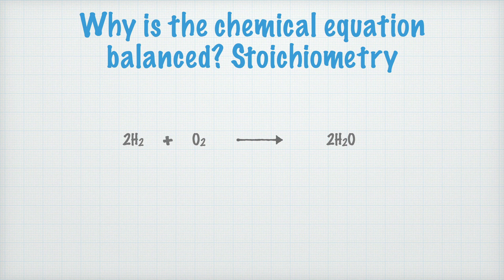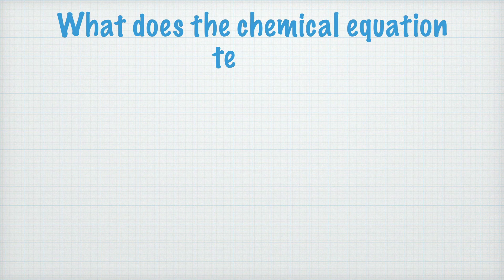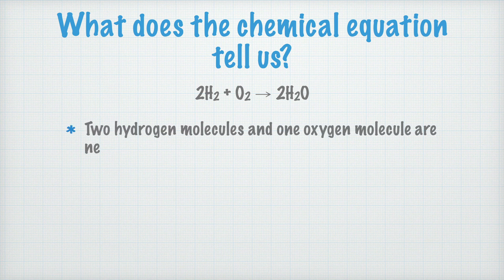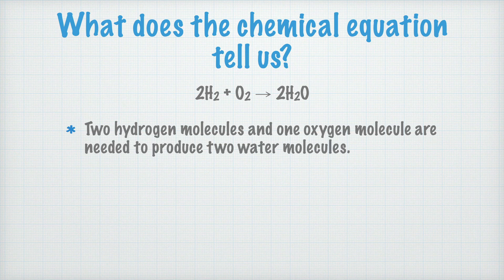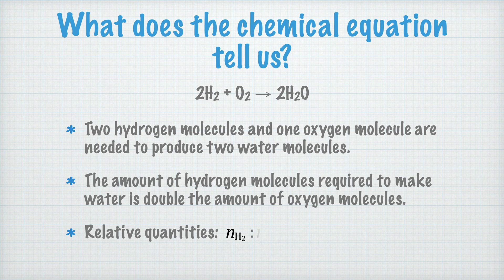This is the balanced equation: 2H₂ plus O₂ turns into 2H₂O. Copy this and add this comment: the mass is conserved — nothing disappears or appears out of nowhere in the reaction. So what does this chemical equation tell us? It tells us that we need two hydrogen molecules and one oxygen molecule to form two water molecules. We need twice as many hydrogen molecules as oxygen molecules for everything to turn into water. The quantity ratio of hydrogen to oxygen to water is 2 to 1 to 2.